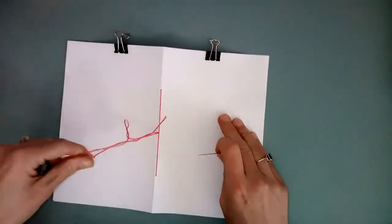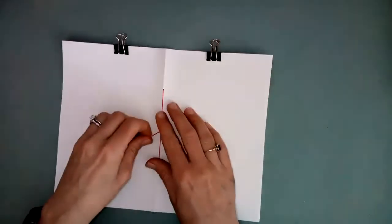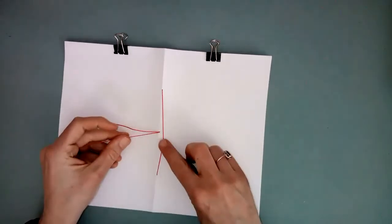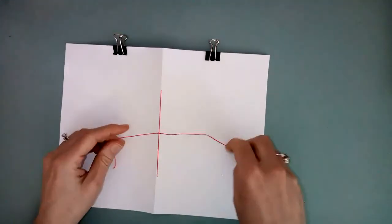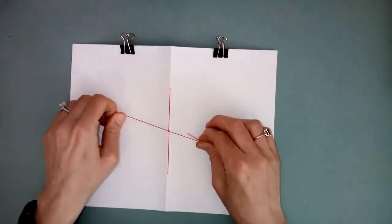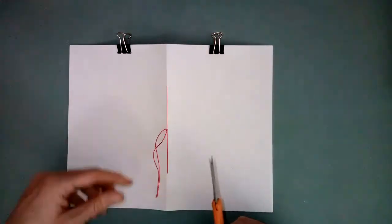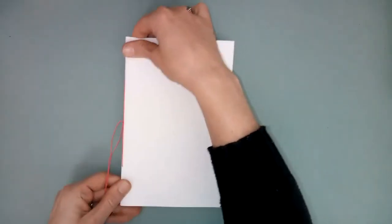You can see there's quite a bit of excess here. I probably could have gotten away with two and a half times the length of my book but I like three it's a good number so I always make it three and a half times the length. It's better to have too much than not enough. Give yourself about a quarter inch or so away from the knot that way it doesn't come apart later. So that is your basic pamphlet stitch.